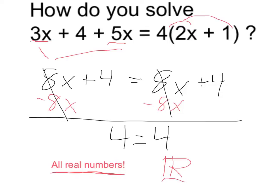So essentially what happens is any time that you have two of the same thing equal to each other, that's going to be true for all real numbers.